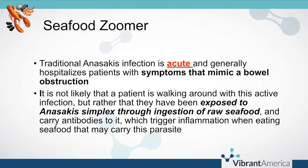There may be a parasitic presence from Anisakis simplex, but antibodies do not necessarily indicate that it is actively present in the gastrointestinal tract. An Anisakis simplex infection is actually an acute infection that generally hospitalizes patients with symptoms that mimic a bowel obstruction — they are taken to the emergency room rapidly when actually infected. So it's not likely that a patient is walking around with an active infection if you're seeing these antibodies on the seafood zoomer. What you're seeing is mainly that the person has been exposed through raw seafood and carries antibodies, meaning that when they eat seafood containing Anisakis simplex, it will trigger inflammation because they are sensitive to the parasite and not necessarily to the seafood itself.